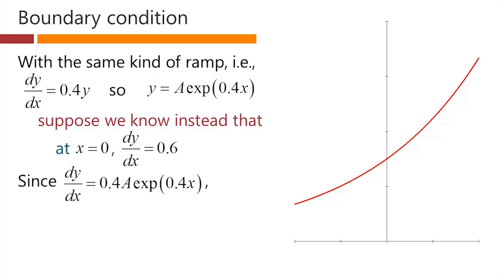Now, dy/dx, we can figure that out. Of course, it's just 0.4 times A times the exponential of 0.4 times x. That's the same thing as we have up here. Then at x equals 0, we know that the exponential of 0.4 times 0 is 1.